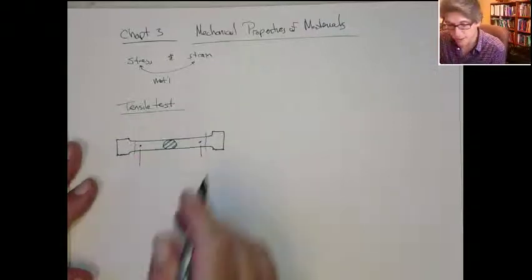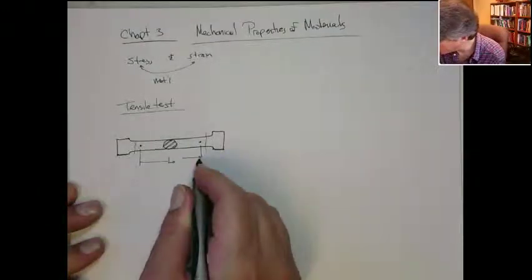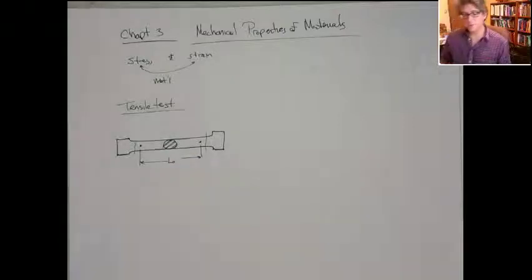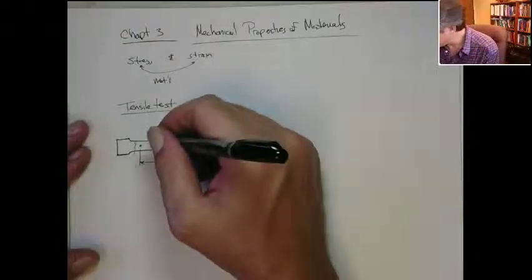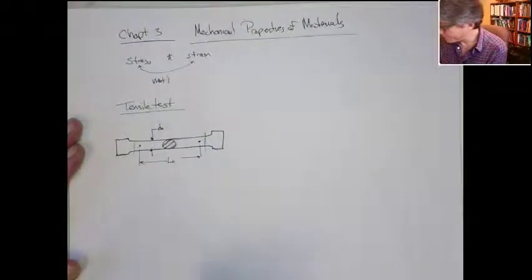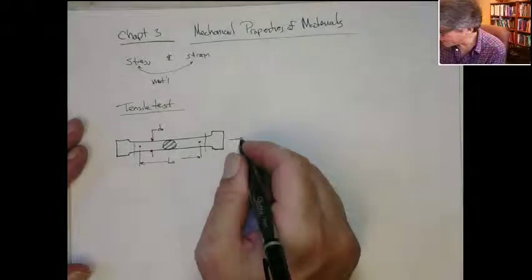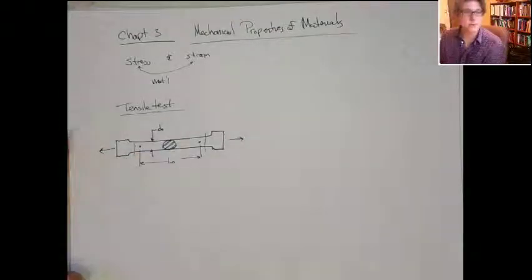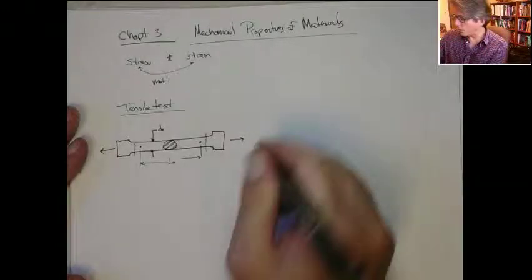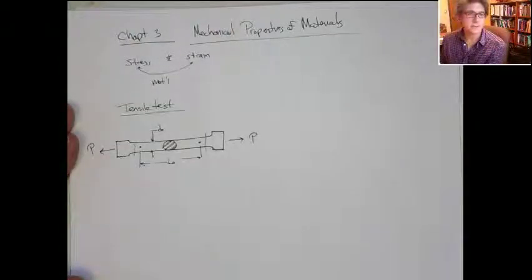And what basically happens is you pick two points on the specimen away from the ends. So this region here is the operating line. Compute the original length of those two. You also look at the diameter. That subscript naught means initially. And then what typically happens, either people do a load control or a displacement control test.